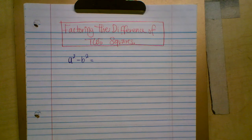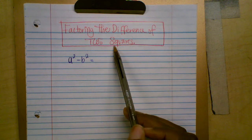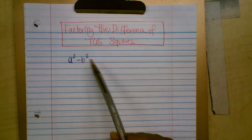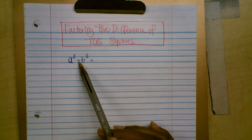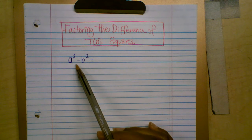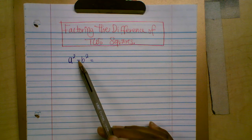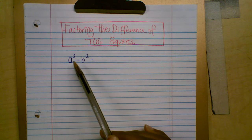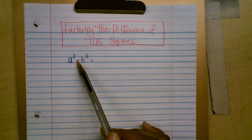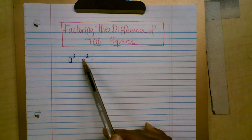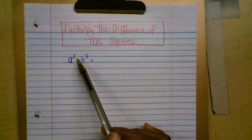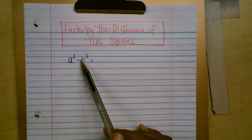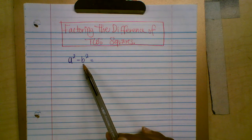Hi everyone. In this video, I'm going to show you how to factor the difference of two squares. There is a rule or formula you use to factor the difference of two squares. It doesn't work for the sum of two squares — if you have the sum of two squares, you have to use imaginary numbers.